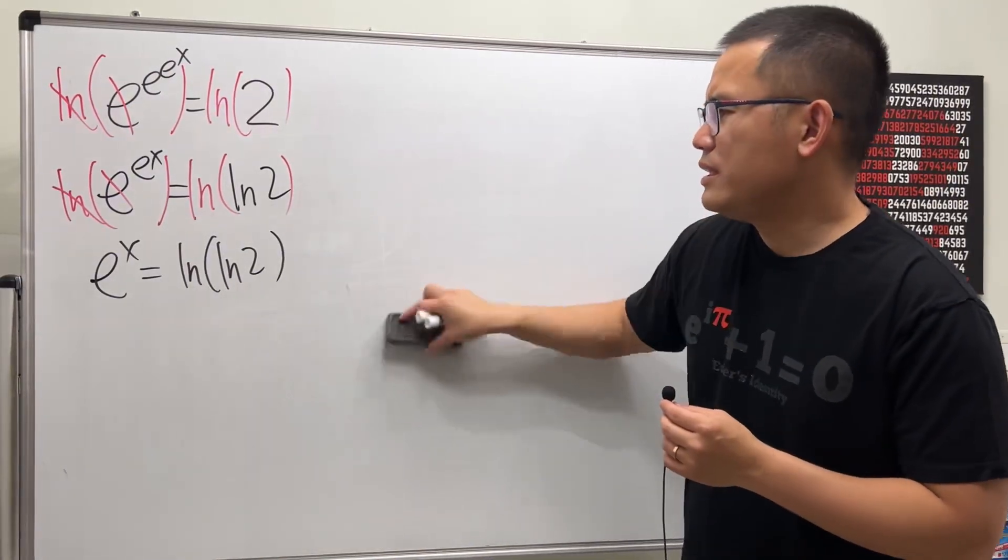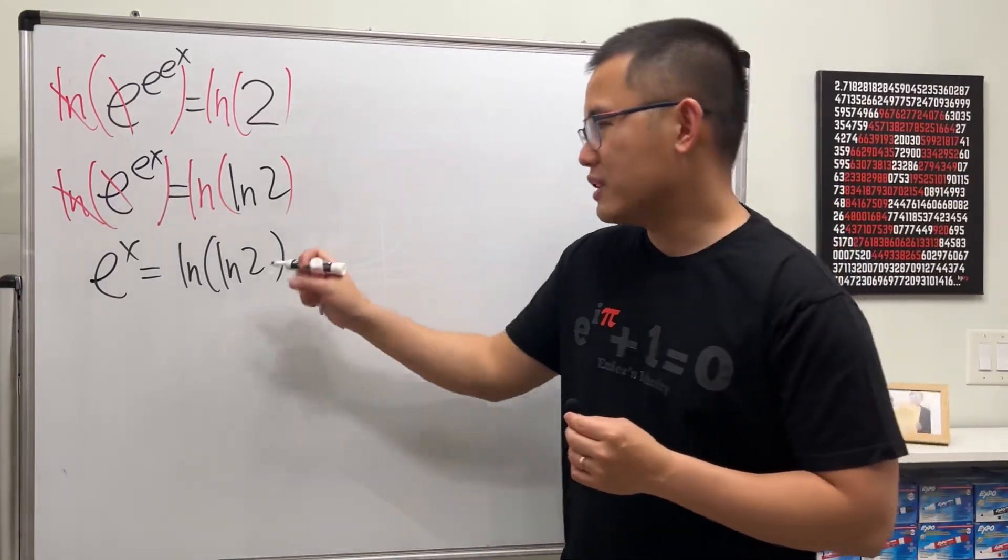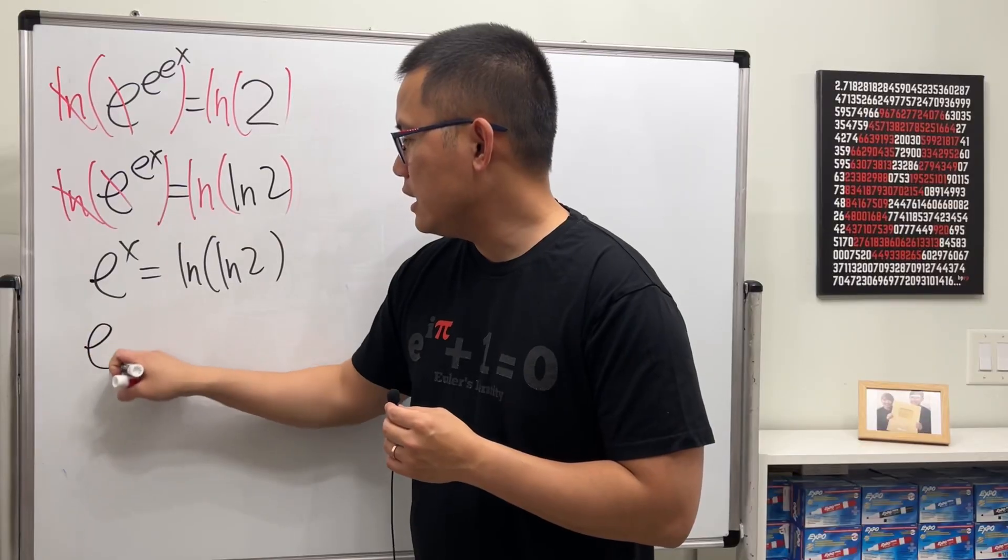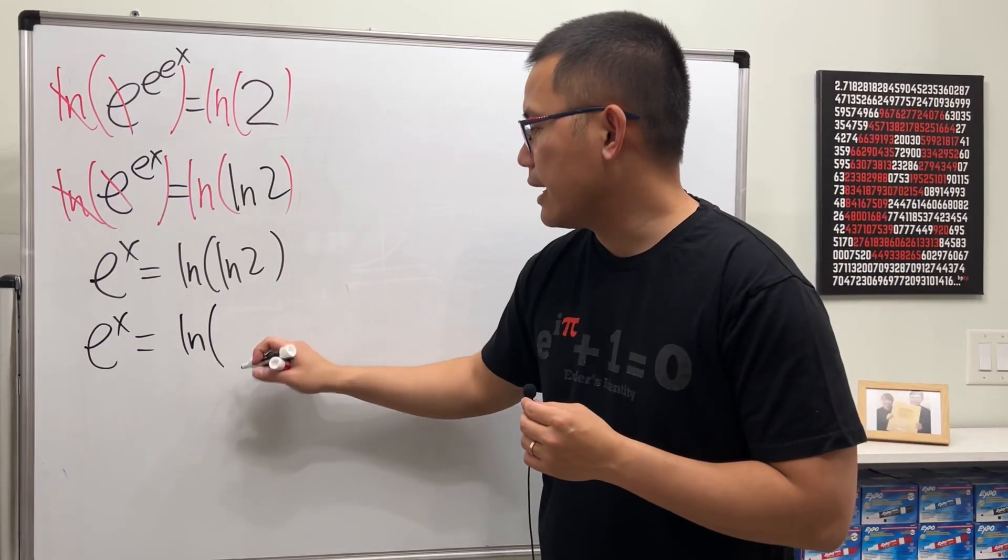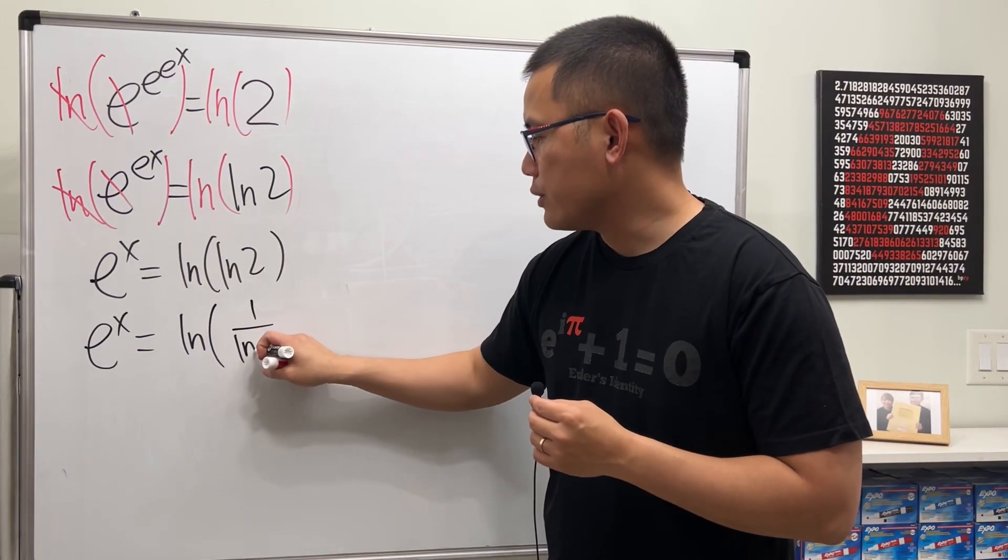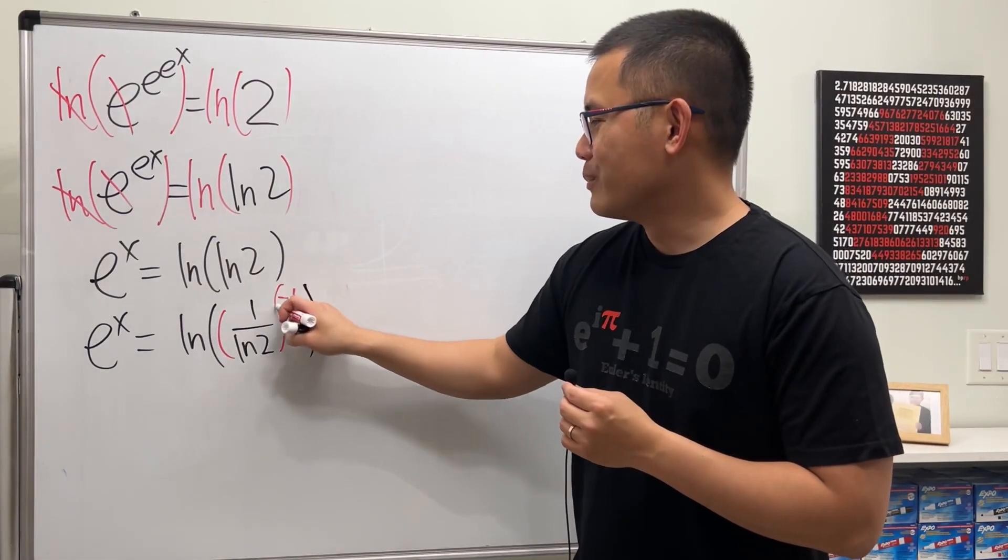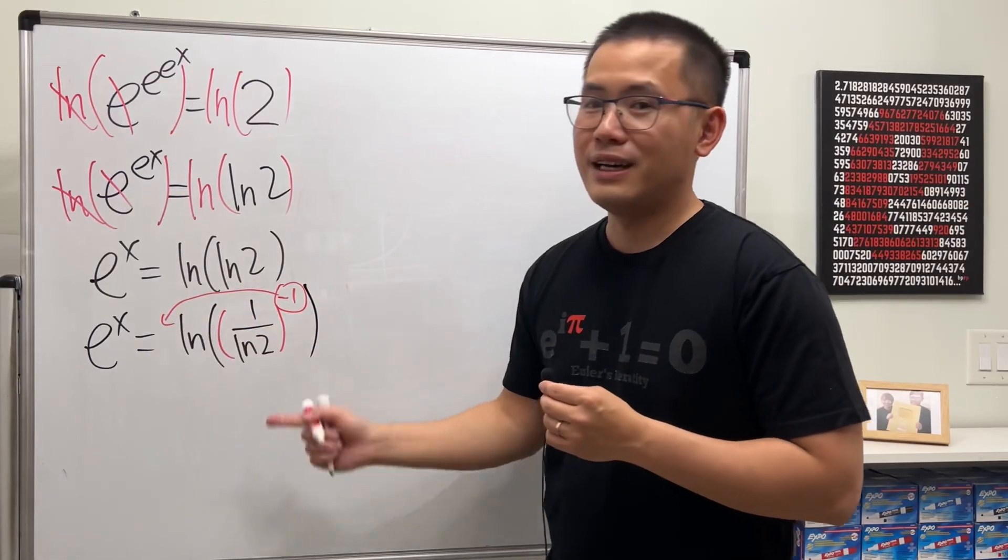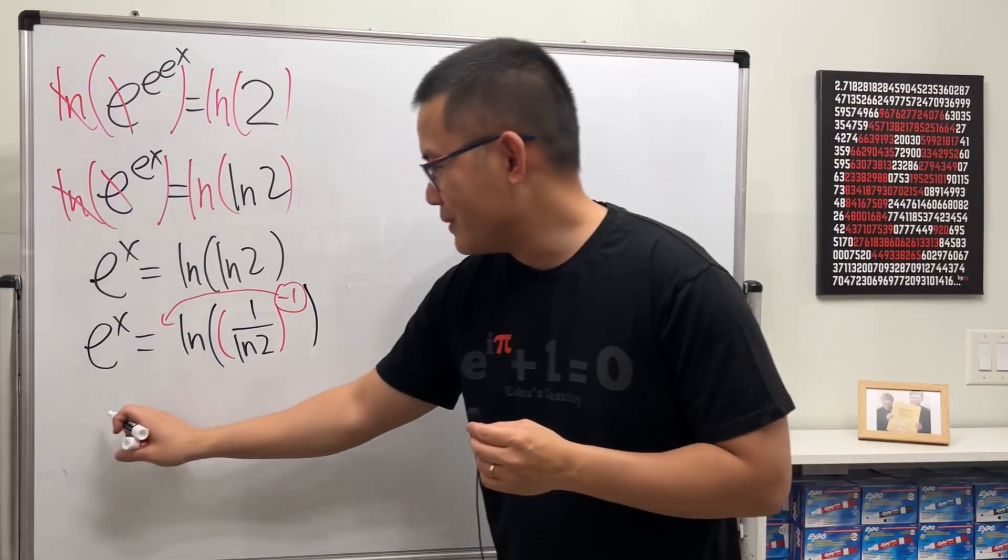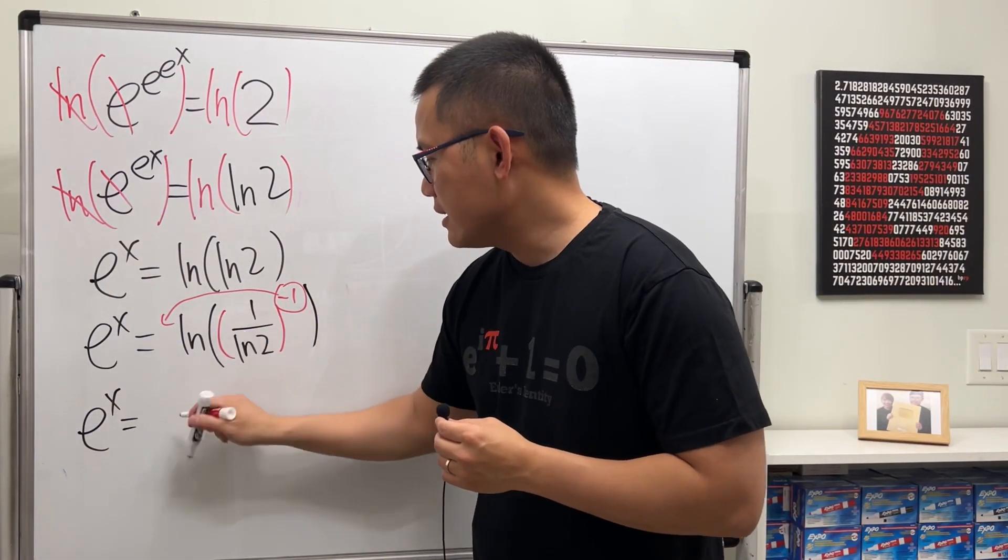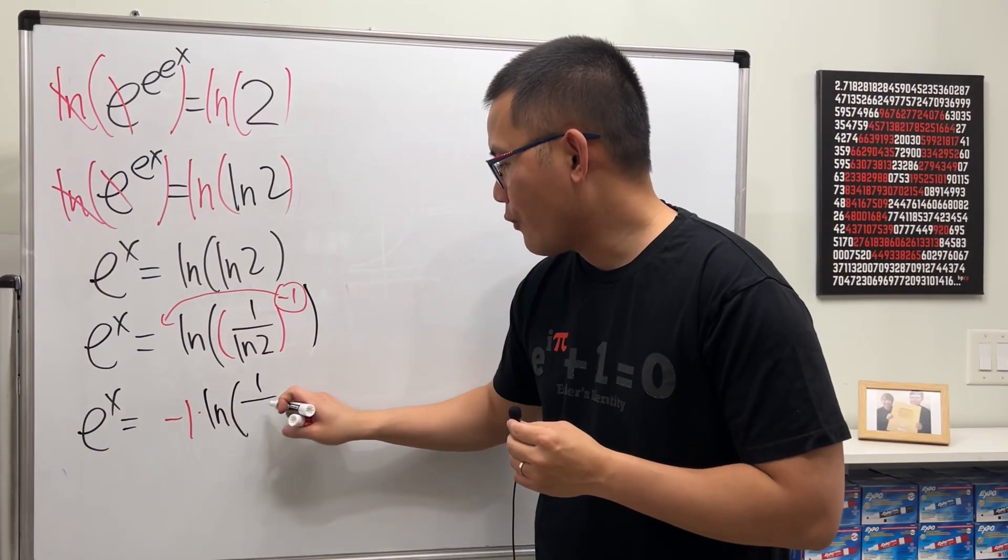And you might be wondering, this really does not look like a negative number. I can make it look like a negative number for you. Check this out. So, I will write e^x equals ln. But instead of ln(2), I will purposely write it as 1 over ln(2) raised to the negative 1 power. Because, this way, we can put a negative 1 to the front. Aha. Right, by this log property. So, now, it will be e^x equals negative 1 times ln of 1 over ln(2).